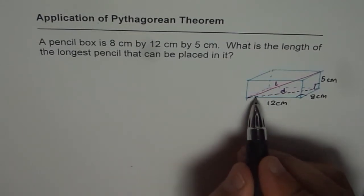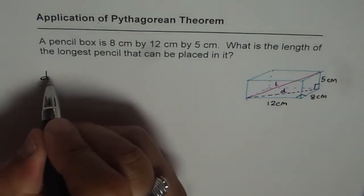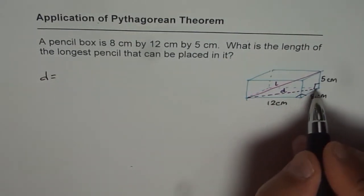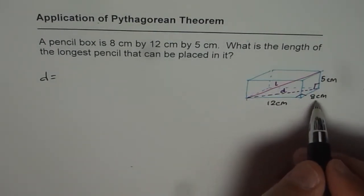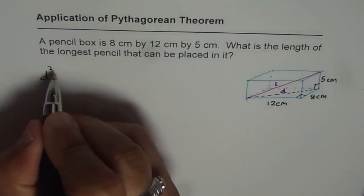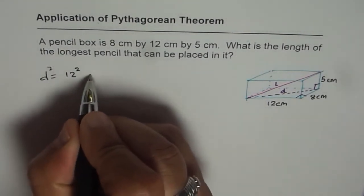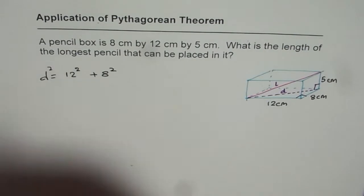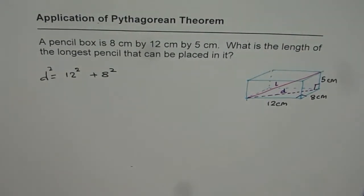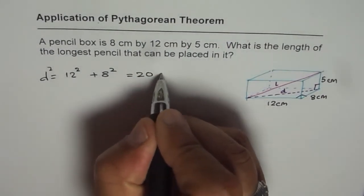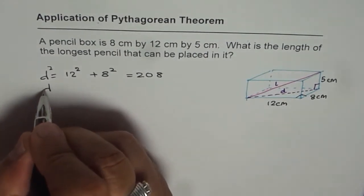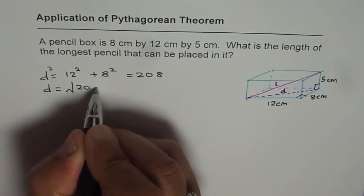So what is D? D is the hypotenuse of the base. The sides of the base are 12 and 8. So D² equals 12² plus 8². Using the calculator, 12² plus 8² equals 208, which gives us D equals square root of 208.